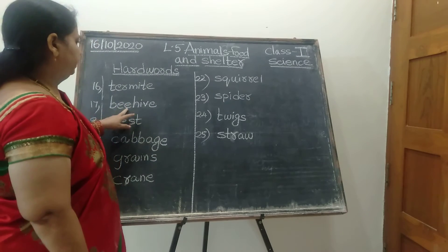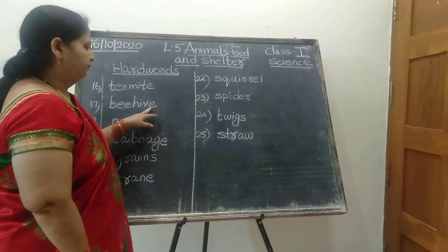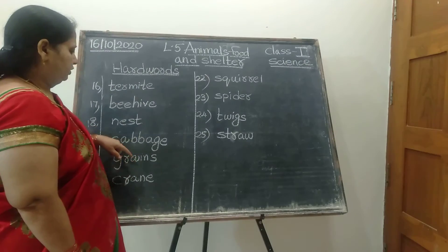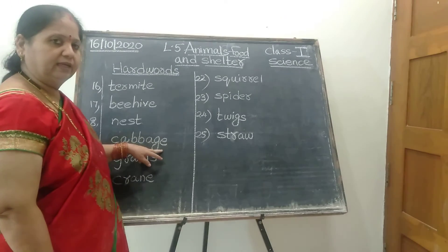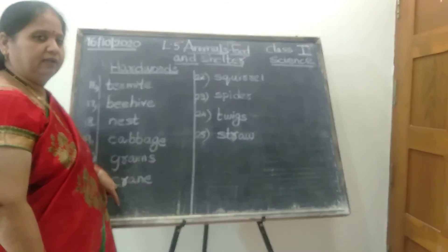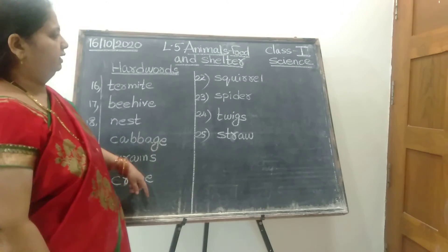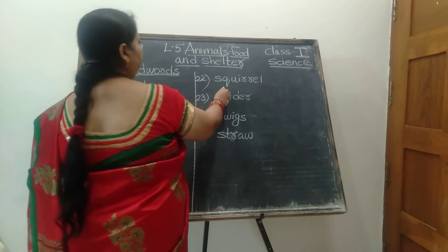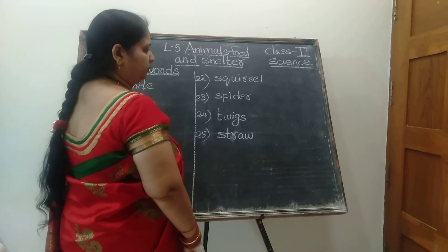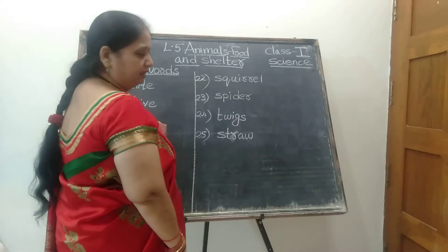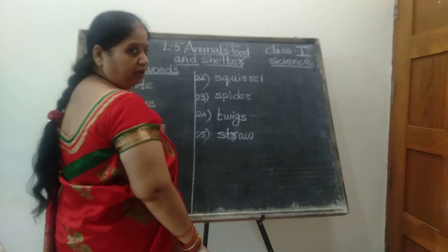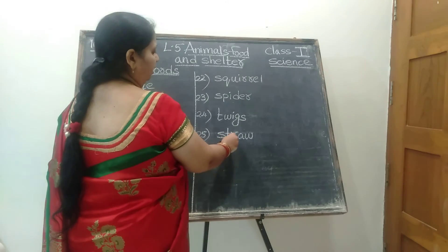Spell the word of beehive: B-E-E, two times, H-I-V-E — beehive. Nest: N-E-S-T. Cabbage: C-A-B-B-A-G-E. Grains: G-R-A-I-N-S. Spell the word of crane: C-R-A-N-E. Squirrel: S-Q-U-I-R-R-E-L. Spell the word of spider: S-P-I-D-E-R. Twigs: T-W-I-G-S. Straw: S-T-R-A-W. Say along with your teacher.